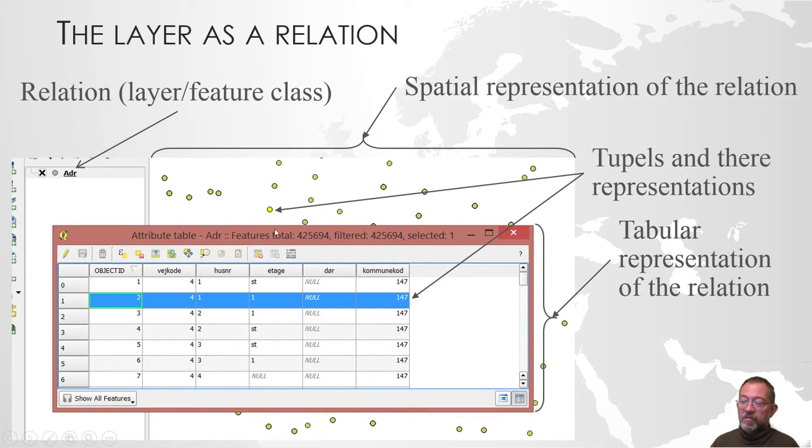So we have the representation of the non-spatial attributes in the attribute table, and we have the representation of the spatial attributes in the map view. And of course the layer is then representing the relation. So we call it layer or feature class or relation. It depends on which background one has. We will find all names and probably also more names around.